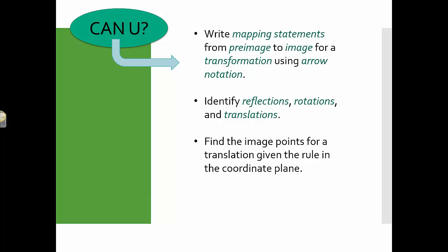Again, make sure that you can write mapping statements from the pre-image to the image for the transformation using arrow notation, identify what a reflection is, what a rotation is, and what a translation is, and then find the image points for a translation given the rule in the coordinate plane. Thanks for watching.